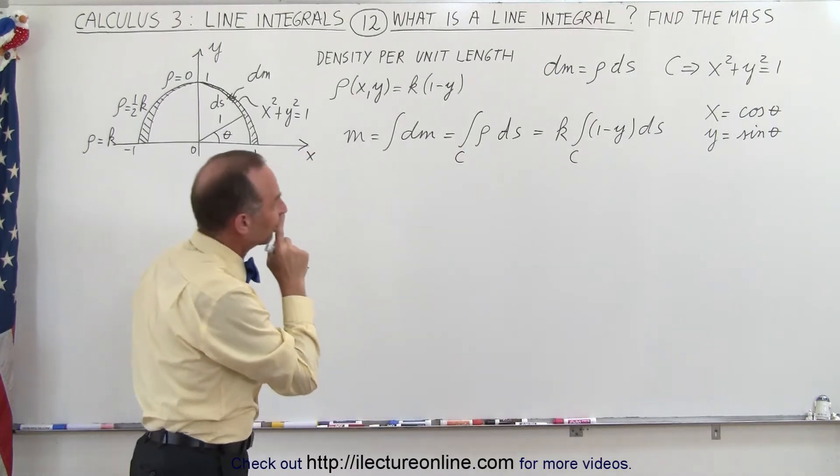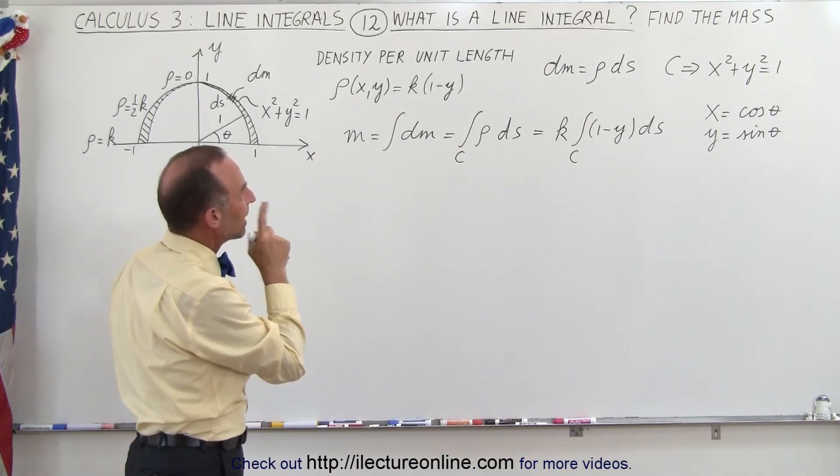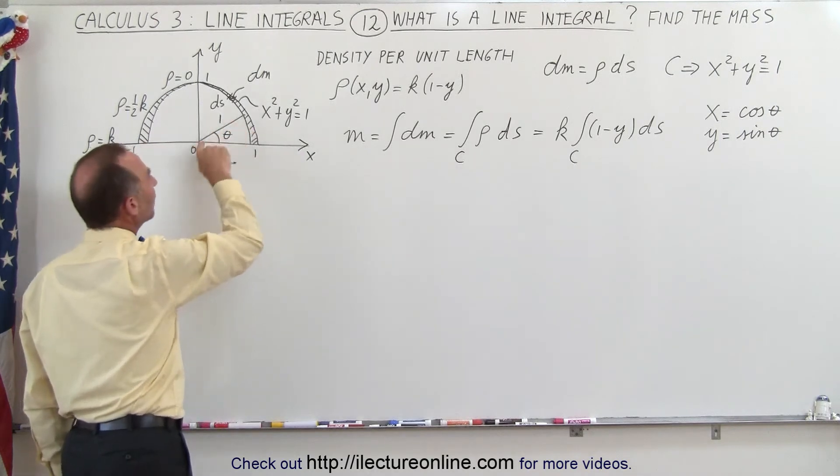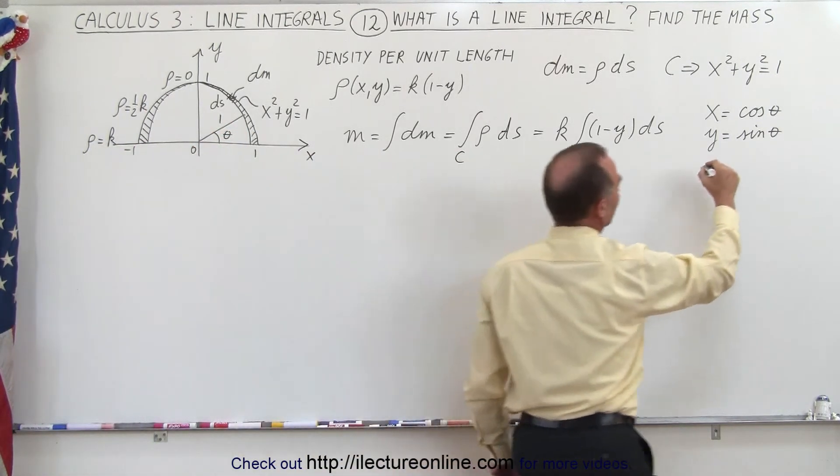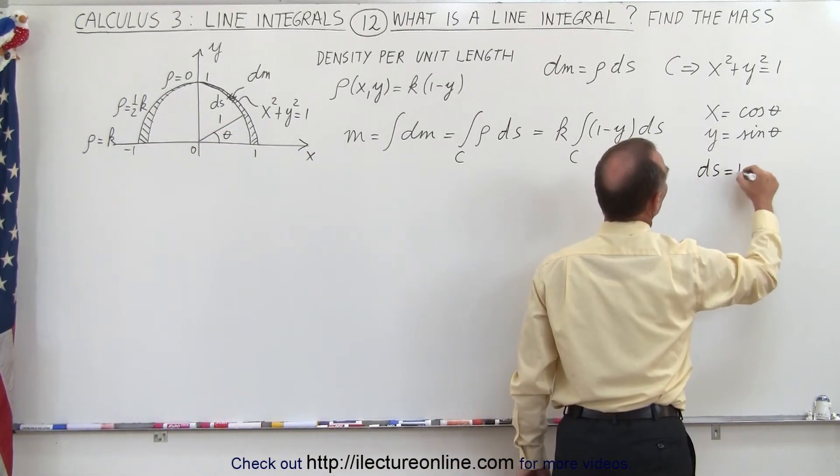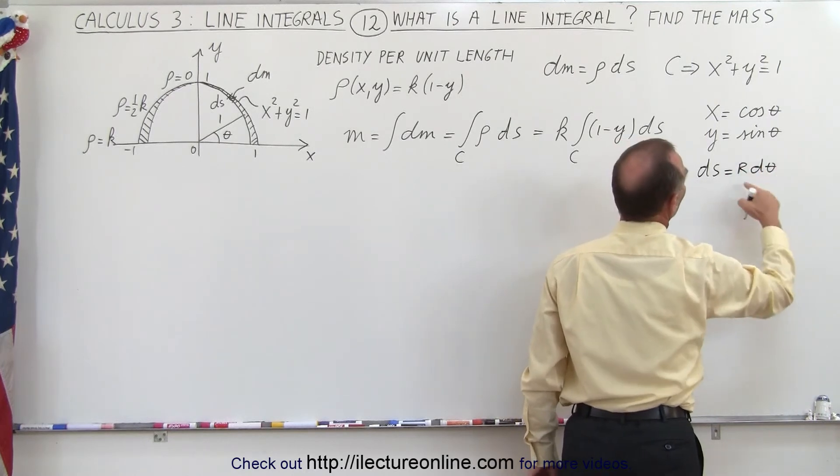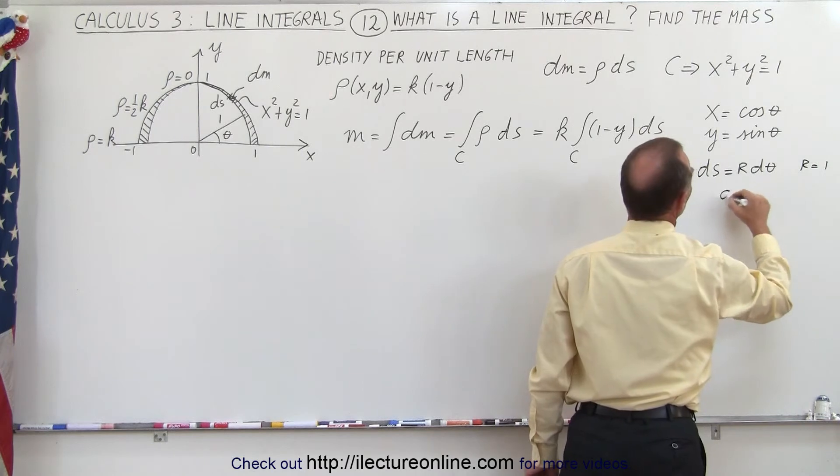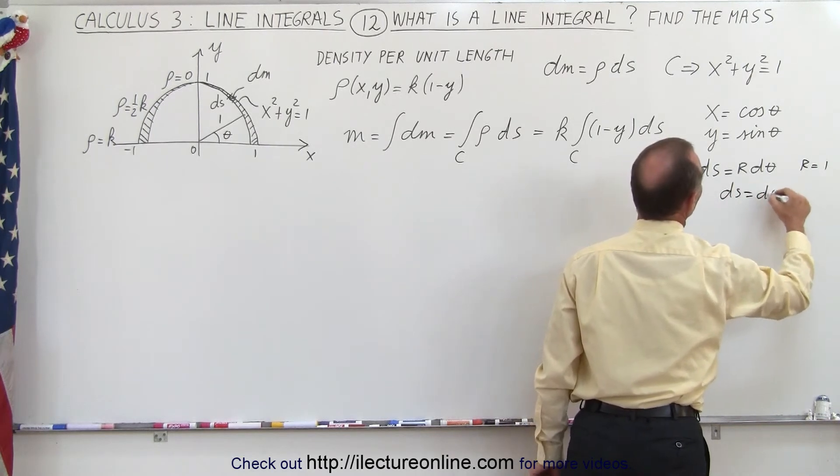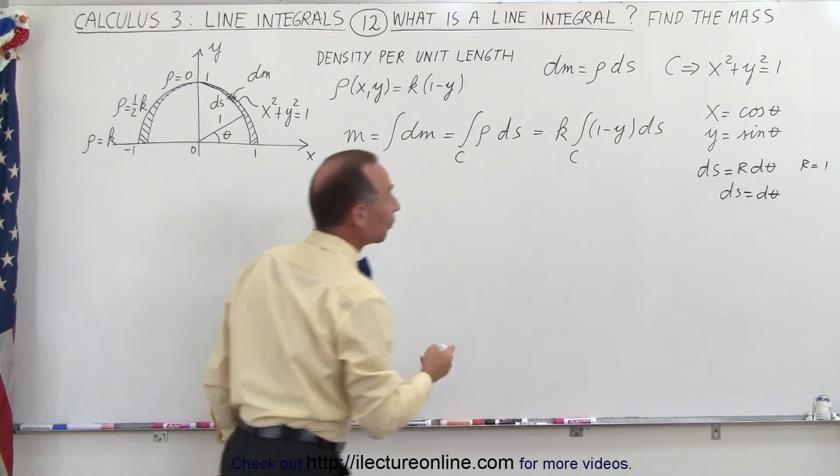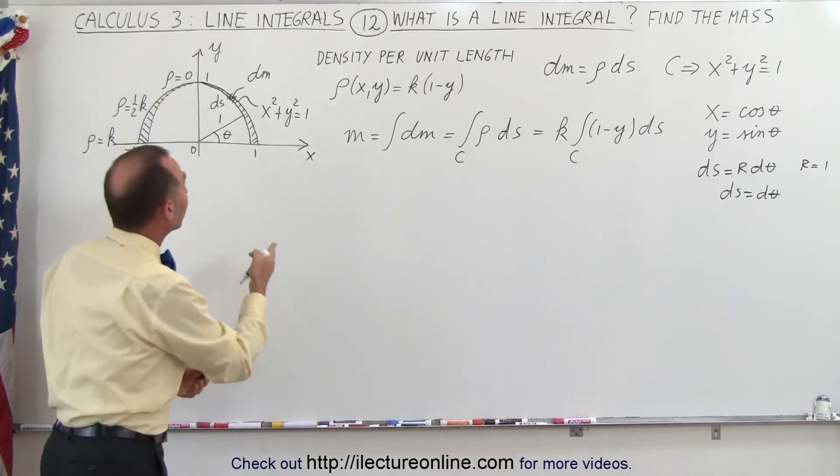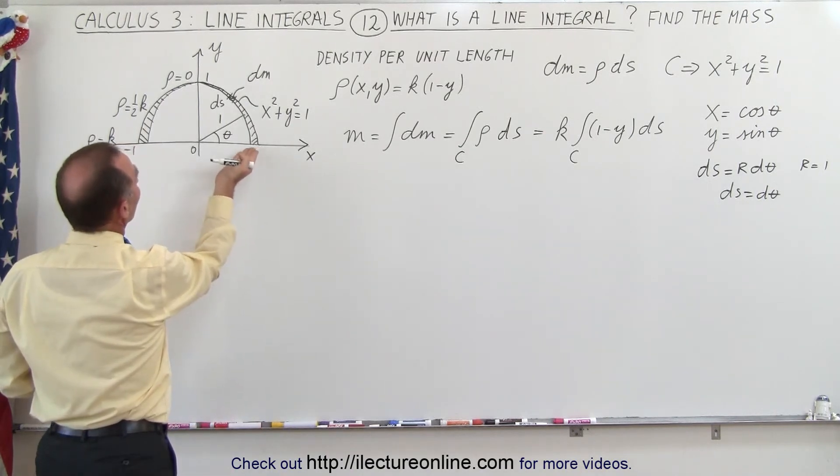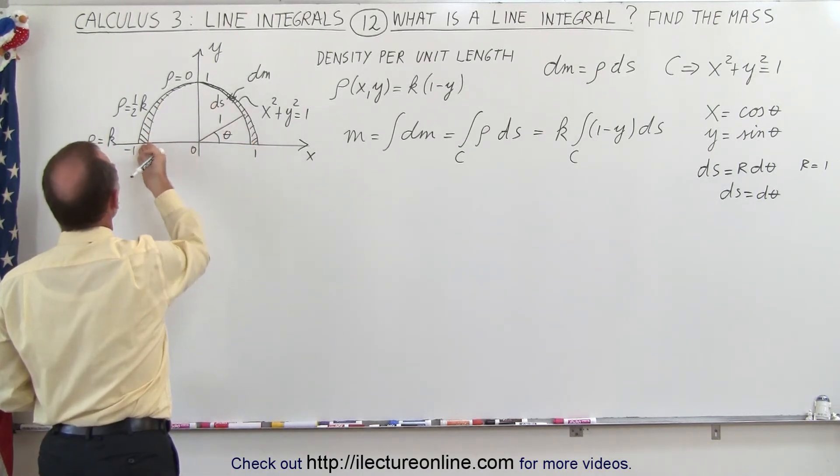Now ds, that would be equal to r d theta. So what we can say here is that ds can be written as r d theta. But since r is equal to 1, we can say that ds is equal to d theta. And yes, if we're going to integrate over d theta, the limits of integration are going to come from 0 all the way to pi.